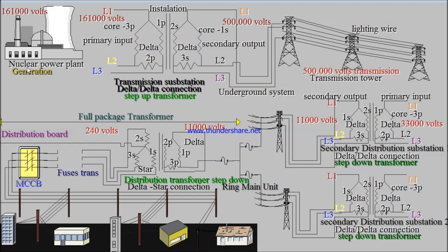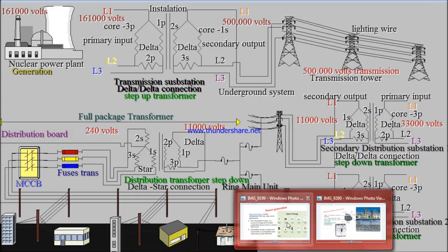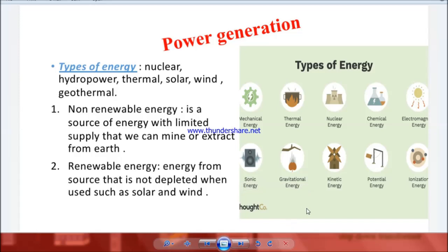In this diagram, you can clearly see that we are using a nuclear power plant, and the nuclear power plant generates 161kV. Let's have a look at the types of primary energy we have. We have mechanical energy, we have thermal energy, we have nuclear energy — this is the energy source that we use for this video. We have chemical energy, electromagnetic energy, sonic energy — all these types of energy that you can see.